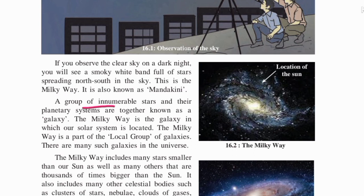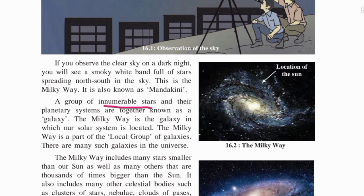A group of innumerable stars and their planetary systems together are known as a galaxy. Innumerable stars means there are many stars — known and unknown — grouped together. Their planetary systems are the same as solar systems. So if you are asked what a galaxy is: a group of innumerable stars and their planetary systems together form a galaxy.